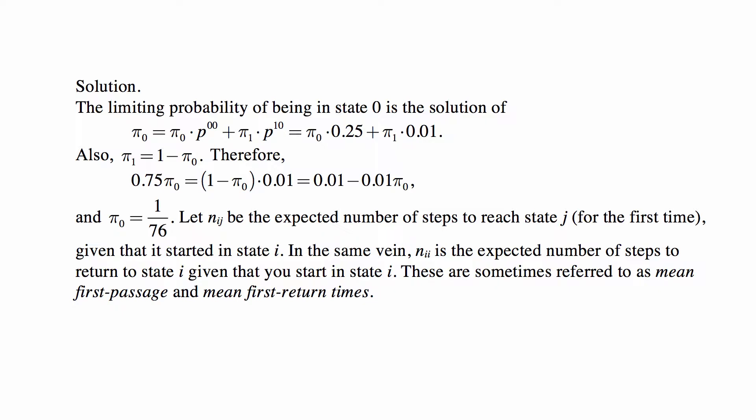Now, how does this relate to the expected time to return? Well, it actually relates very directly. So let's go over this idea of how the two relate to each other. Let us write Nij for the expected number of steps to reach state j for the first time, given that the process started in state i. And in the same vein, let Nii be the expected number of steps to return to state i, given that you start in state i, which is exactly the kind of thing we're looking for. These are sometimes referred to as mean first passage and mean first return times.